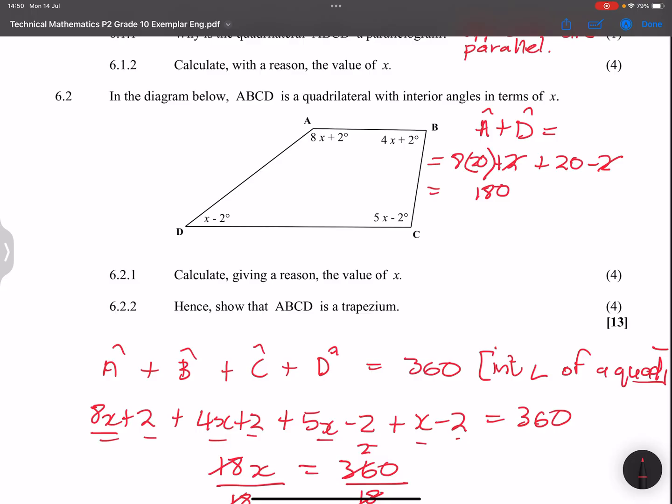So what does therefore mean? It means that A and D must be co-interior. So therefore, it means that AB must be parallel to CD. And what would be the reason for that? Because co-interior angles are supplementary. So co-interior angles gave us a sum of 180.